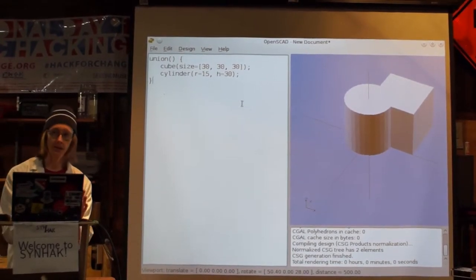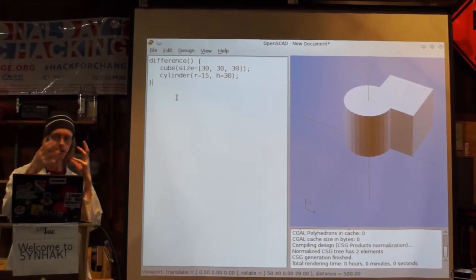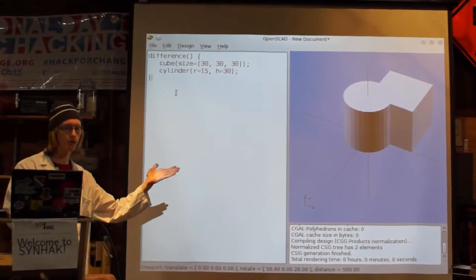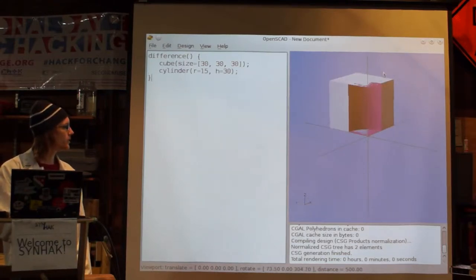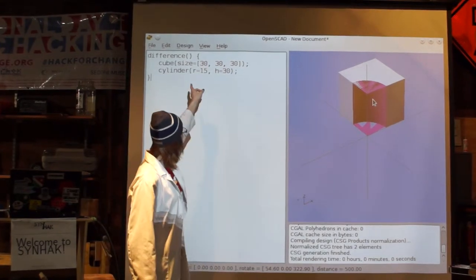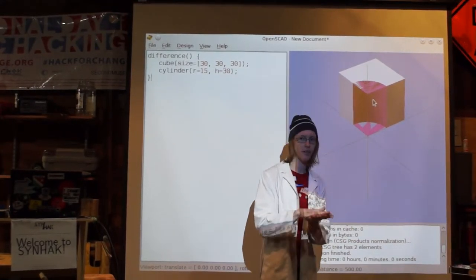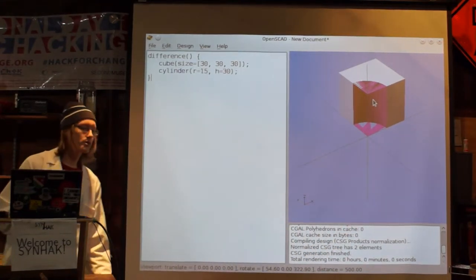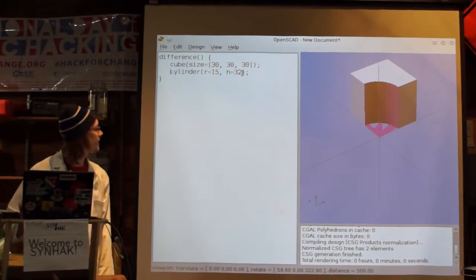There's a bunch of other different operators you can do instead of union. For instance, difference. Difference takes two objects and takes the difference of the first one minus everything after it. If I hit F5, you'll see a cube missing a part of a cylinder. Here's the first big issue about OpenSCAD you'll run into. See how it's got these weird purple edges? It's freaking out. That's because the cylinder height 30 and the cube is also height 30. These two faces are sharing the same things. OpenSCAD doesn't quite know how to deal with that. This is one of the tricks you'll want to do when using OpenSCAD. Just make it a little there. Suddenly, the top one's gone.